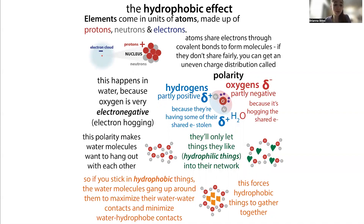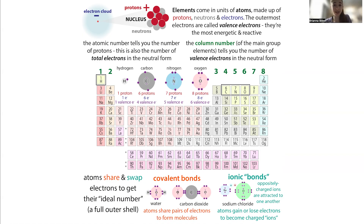Each of those carbons and hydrogens and all those other atoms are made up of smaller subatomic parts: protons, neutrons, and electrons. The protons and electrons are oppositely charged, so the protons are positive and the electrons are negative.